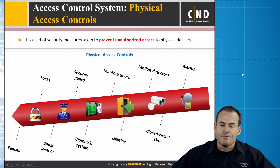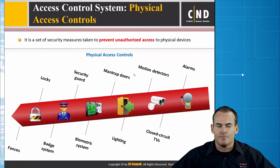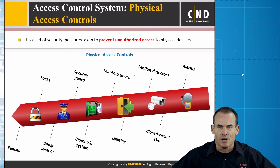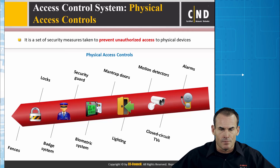Physical access controls deal with physical access — pretty straightforward. Examples include locks, fences, badge systems, security guards, biometrics, manned trapdoors, lighting, fire suppression, and alarms. We'll be taking a look at physical access specifically in its own module a little bit later in the course.